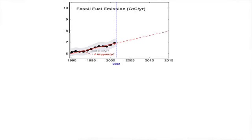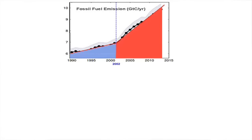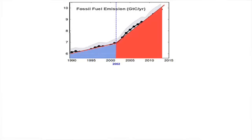A clue comes from changes of fossil fuel emission of CO2 and contemporaneous changes of atmospheric CO2. During the decade before the turn of the century, fossil fuel emission increased almost linearly. During the subsequent decade, it also increased linearly, but three times faster. The area under the curve represents the CO2 that was emitted into the atmosphere — far more was emitted during the second decade than during the first decade. Two hundred percent more.